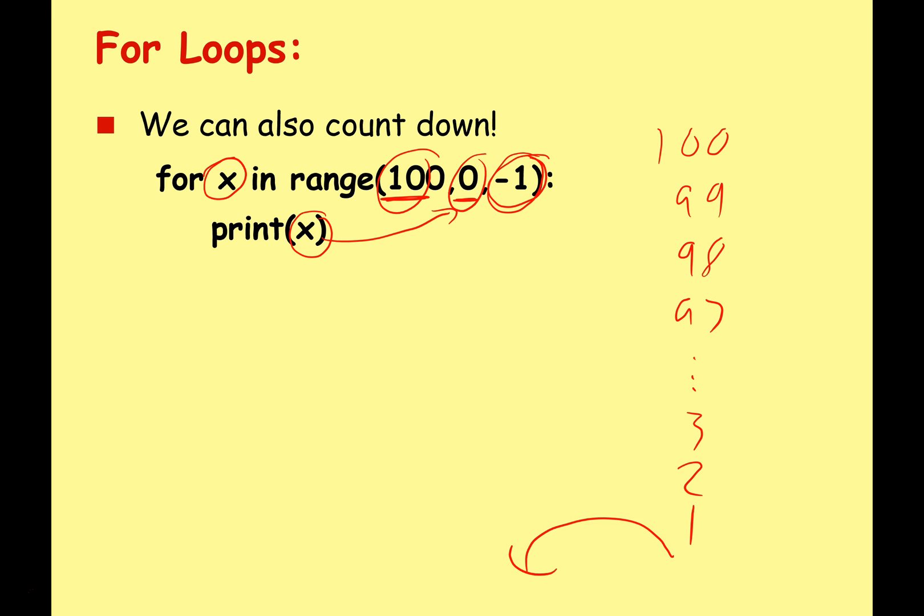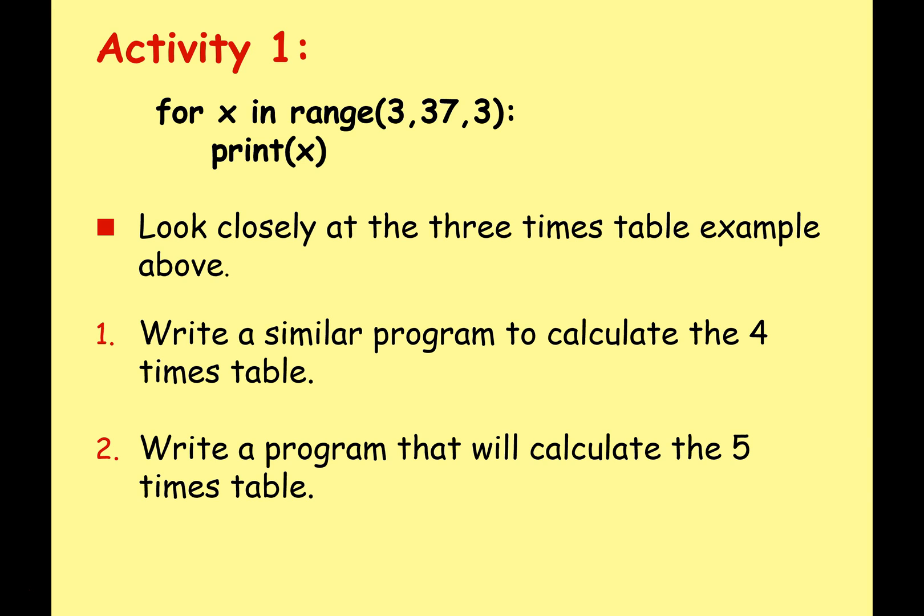Let's do some programming activities. If we take a look at the example here, it's the one we looked at previously and this will print out the three times table from 3 all the way to 36. Let's change the program so that we can calculate the four times table, and then change that again so we can print out the five times table. Have a go, I'll come back and give you the solution.